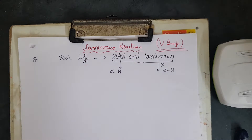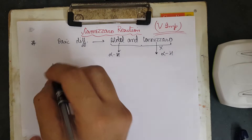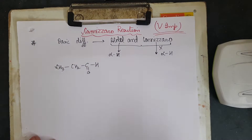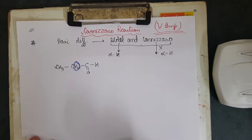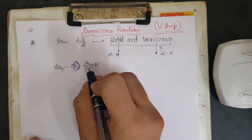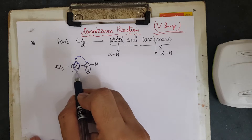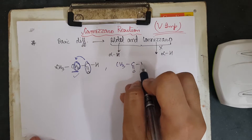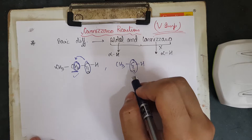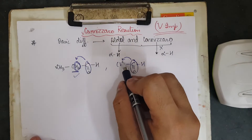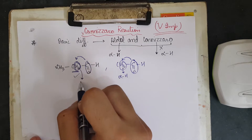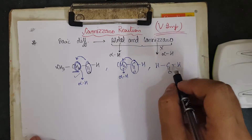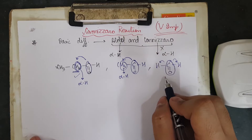Let me explain what alpha hydrogen is. If I take the compound CH₃CH₂CHO, this compound has an alpha hydrogen. Alpha hydrogen means that if we have a carbonyl group and an adjacent carbon to that carbonyl, that adjacent carbon should have a hydrogen. Another example: CH₃CHO has a carbonyl group and the adjacent carbon has hydrogen, so that is known as alpha hydrogen.